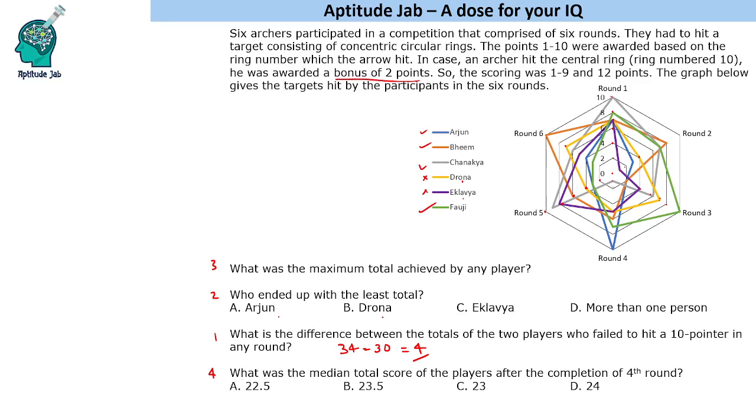Who ended up with the least total? Drone cannot end up with the least total. Drone has scored 34 points. Eklav has 30. So let us check for Arjun. Arjun is the blue one. If we start with this, Arjun has 7 points here. Then he has 3 points in the next round. That makes it 10. Then 3rd round, he has 2 points. So 12. Then round 4, he will get 12 points. So 12, 12, 24.